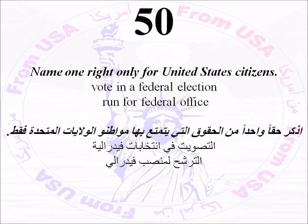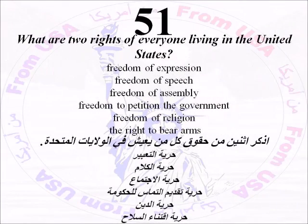Number Fifty: Name one right only for United States citizens. Vote in a federal election, or run for federal office. Number Fifty-One: What are two rights of everyone living in the United States? Freedom of expression, freedom of speech, freedom of assembly, freedom to petition the government, freedom of worship, or the right to bear arms. You only have to remember two of these rights for the test.